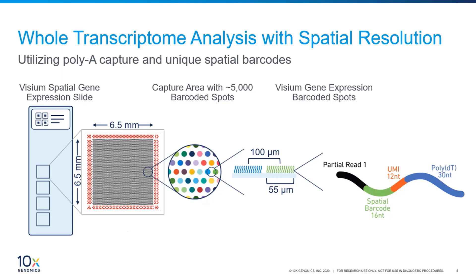This slide shows the key features of our Visium technology. Each slide contains four capture areas, so one slide can hold four separate tissue sections. Each capture area contains around 5,000 barcoded spots, represented here by dots of different colors. The capture area size is 6.5 by 6.5 millimeters squared and is surrounded by a fiducial frame that is used during data analysis for imaging alignment. Each spot is 55 microns in diameter.